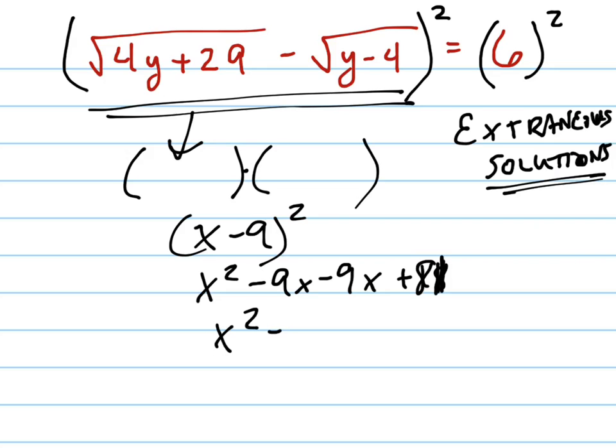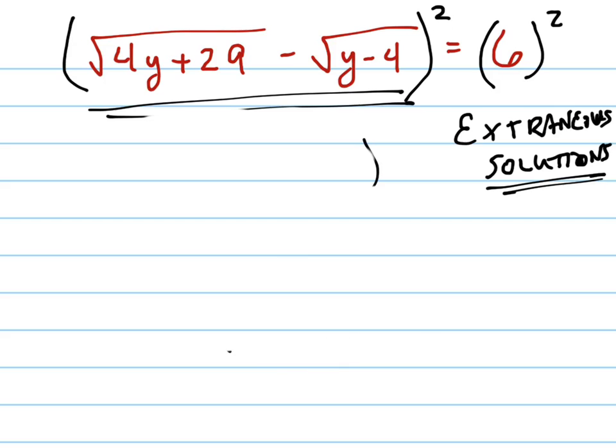Which means you get 9x minus 18x plus 81. So you're going to get double of that middle number. So what we're going to do when we square this is use that formula or think through what we're doing, but I'm going to do it kind of in shorthand.